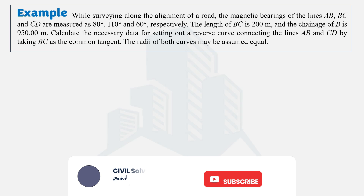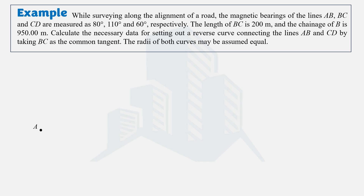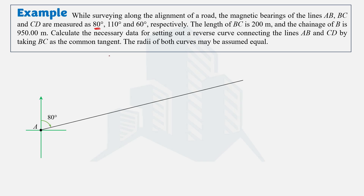The three different lines are AB, BC, and CD. The bearing of AB is 80 degrees, so drawing true north and making an angle of 80 degrees gives us the AB line, with B as a point on that line. The bearing of BC is 110 degrees, so drawing true north at B and drawing BC at 110 degrees gives us the BC line, with C as a point on that line.